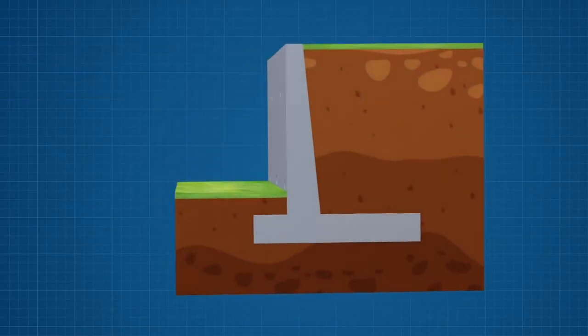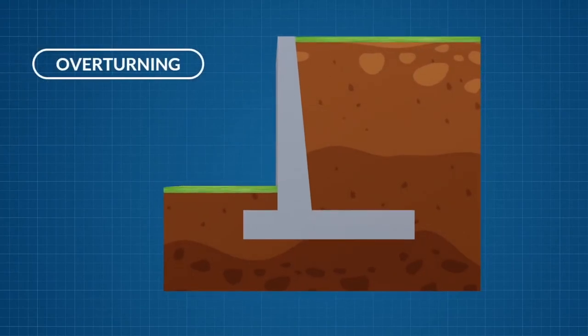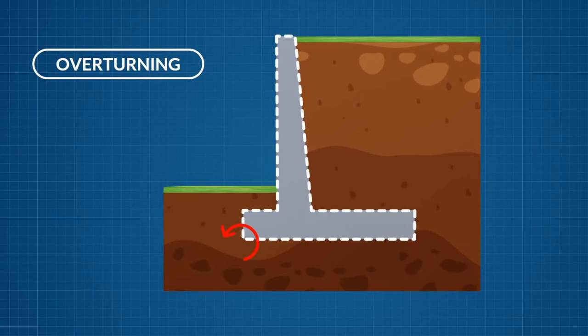Let's now look at the failure modes of retaining walls. The first failure mode is failure by overturning. In this failure mode the toe will act as the center of rotation and the entire wall will rotate about this point.